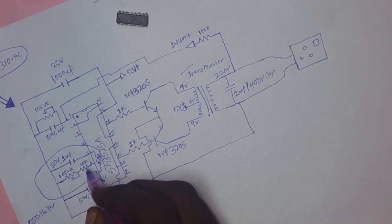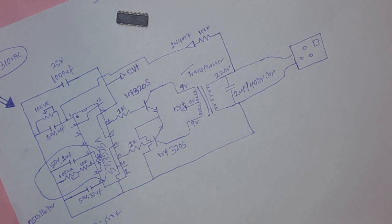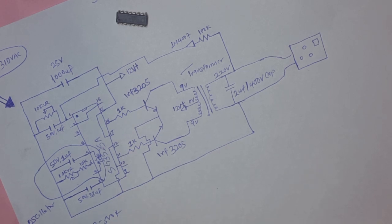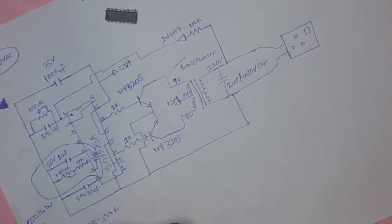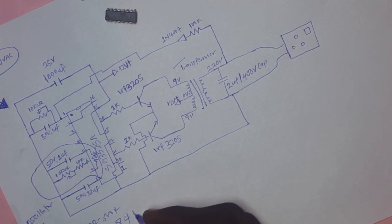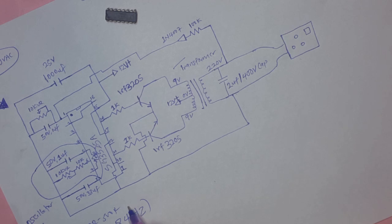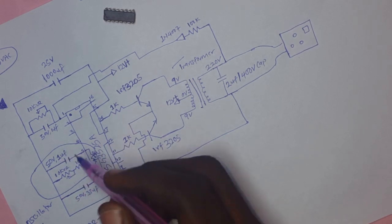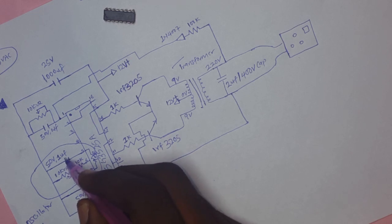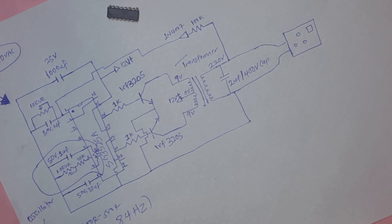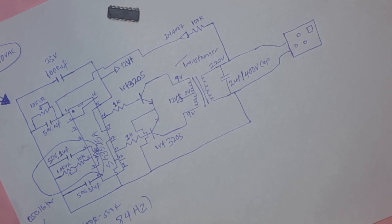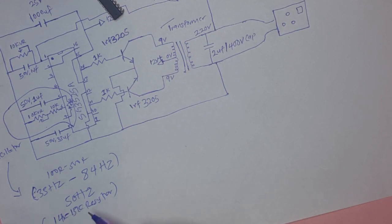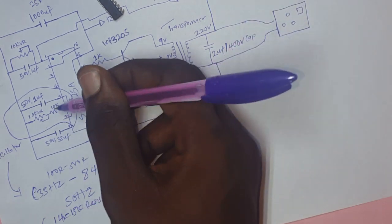Using the 10k resistor and 10k variable resistor, I can get an oscillator range between 35Hz and 84Hz. To tune to 50Hz, the resistance needed here will be around 14 to 15k. So if you want to use a fixed resistor, you can use a 15k resistor to get 50Hz when using a 1uF capacitor.